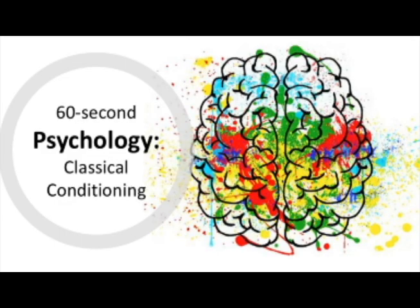Once the association has formed between these two stimuli, the neutral stimulus can cause the same response as the unconditioned stimulus. In the example of the rat and the loud noise, once the association has formed, the rat can cause the same fear that was originally caused by the noise. The neutral stimulus becomes conditioned — essentially meaning a response has been learned. We can now call the rat a conditioned stimulus.